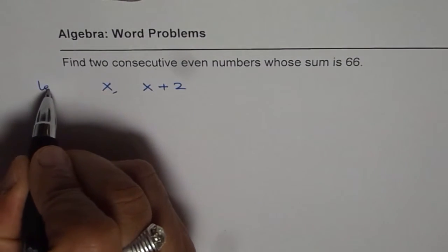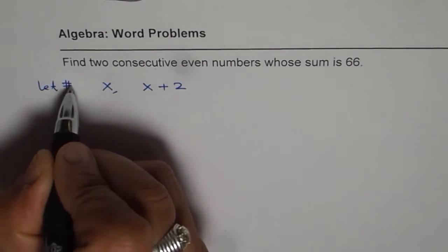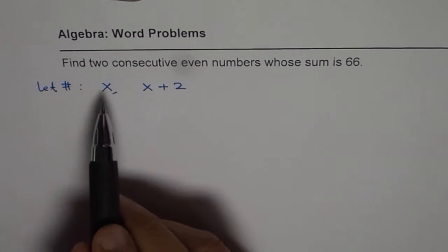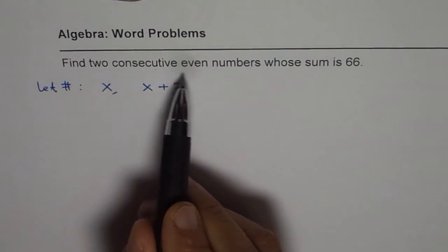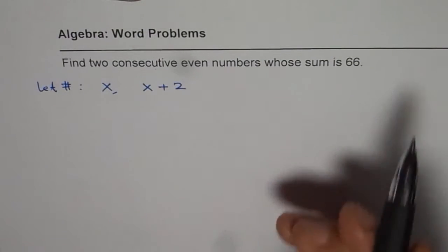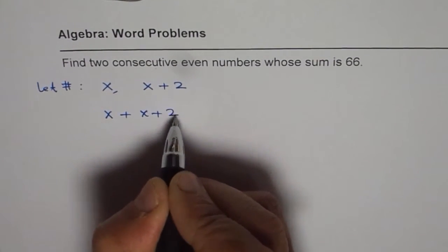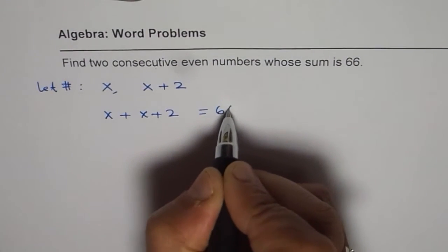So, we will say let the numbers be x and x plus 2. Now, the question is straightforward: find two consecutive even numbers whose sum is 66. So, you just add them up, and that should be 66.